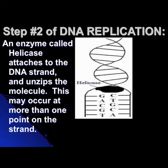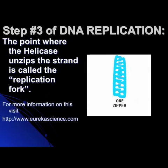What breaks those hydrogen bonds initially between the bases? It's an enzyme called helicase. It attaches to the strand on command of the DNA when it knows it needs to replicate. Helicase starts to break the hydrogen bonds between bases and unzips the ladder. This probably occurs at more than one point because there are millions and millions of base pairs. Any site where this happens is called a replication fork because it opens up and creates space between the bases.